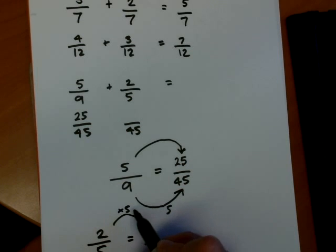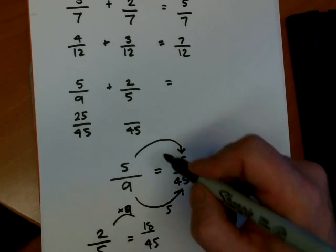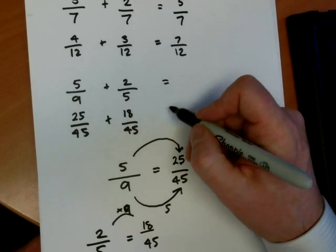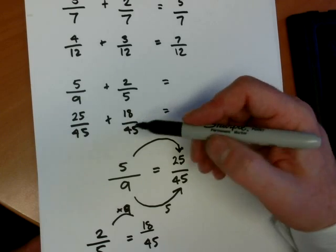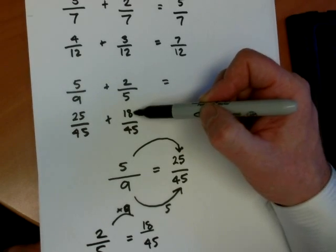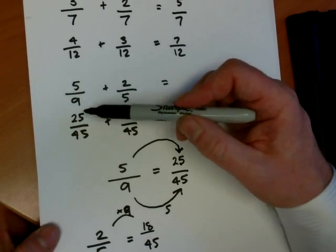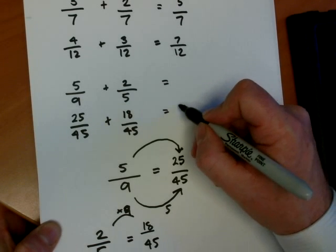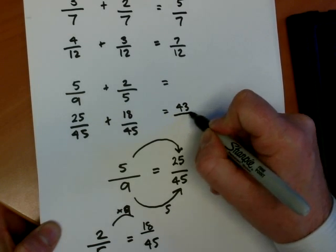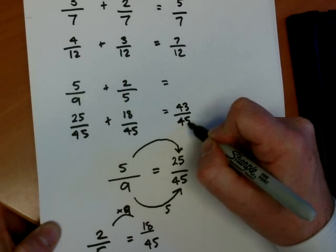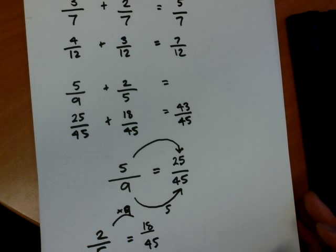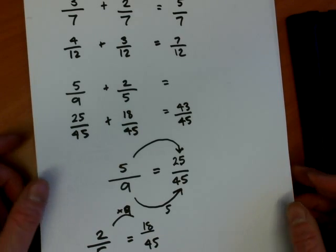So I must times my 2 by 9 and I get 18 forty fifths. So I now add the 25 and 18 together. That's like adding 25 and 20 and then taking away 2. So 25 and 20 would be 45 take off 2, 43. And the answer then is 43 out of 45. And that's using the method called equivalent fractions.